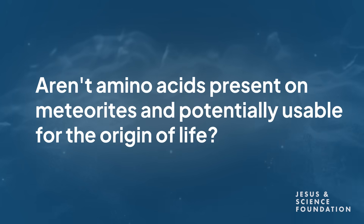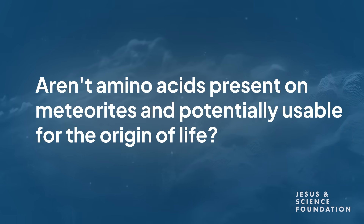Aren't amino acids present on meteorites and potentially usable for the origin of life? They're absolutely present in meteorites. You find them occasionally, though most of what comes in on meteorites burns up. Amino acids can come in on meteorites and you can find them, but they're usually in very small amounts and in vast mixtures of other things. They're not just alpha amino acids — you also find beta amino acids, gamma amino acids, and many other compounds.